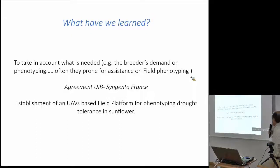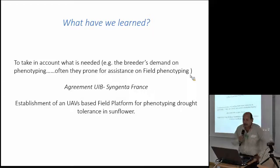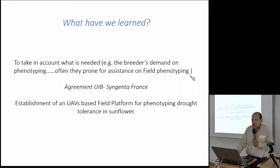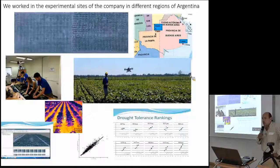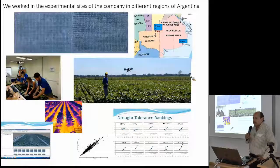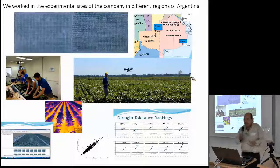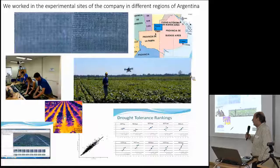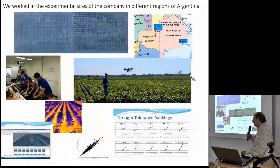We also learned that we need to take into account the demand — what is actually needed. We experimented during an agreement we performed with Syngenta France, during which we established a UAV-based field platform for phenotyping lodging tolerance in sunflower. During this work, we worked in the experimental sites of the company in different regions of Argentina, and we learned what breeders demanded in a real breeding program.